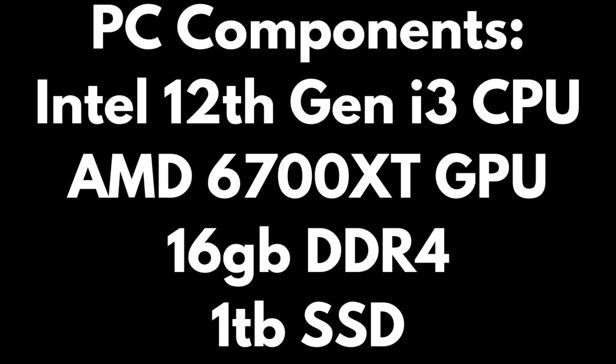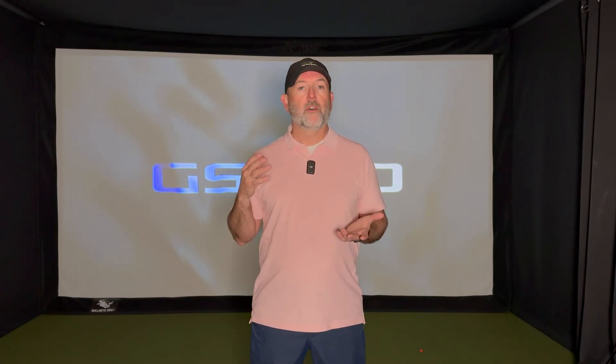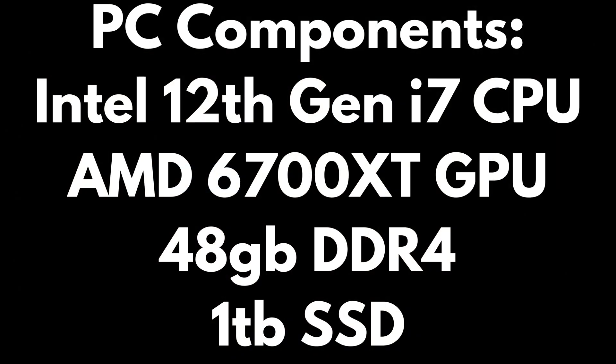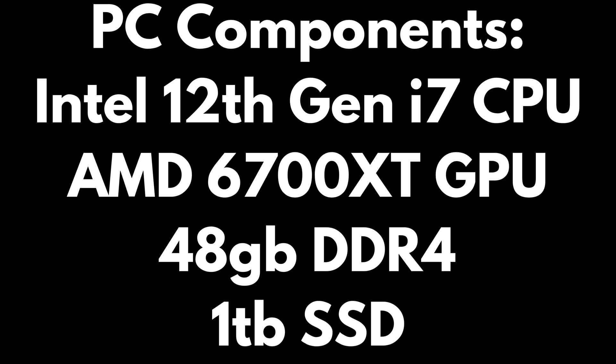Looking at that Cabot Cliffs flyover, you can really see the difference my new setup had versus my original setup. My original setup was an i3 processor, 16 gigs of RAM, and a 6700 XT video card. The video you just watched is with 48 gigs of RAM — I added 32 gigs — and I upgraded the processor from an i3 to an i7, still 12th generation, because it was a bargain at half the cost of the newest generation. On Cabot Cliffs, I went from around 40 to 44 frames per second on average up to 55 frames per second on average — a gain of 10 to 15 FPS, which is impressive.